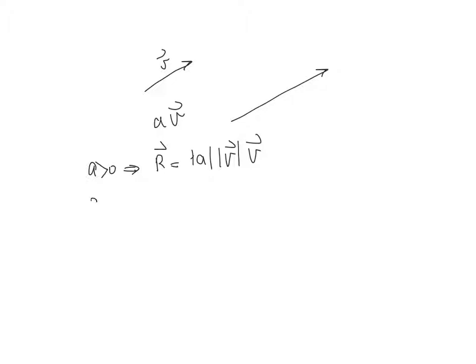In case that A is negative, you're going to have the same thing, but the direction is going to be in the opposite direction. So if I multiply by A, which is negative, I'm going to get another vector which is in the opposite direction of V, and the magnitude is going to be the absolute value of A times the magnitude of V. And the direction, again, is going to be opposite direction.